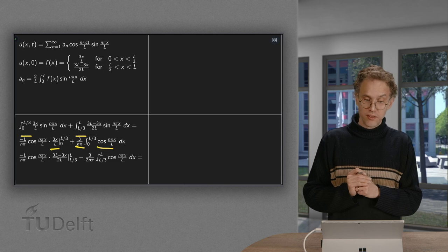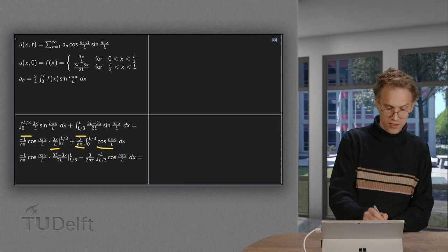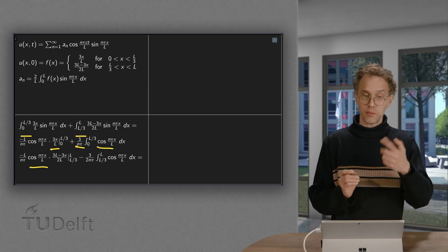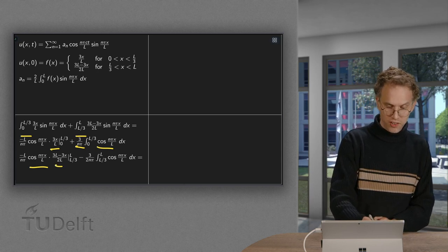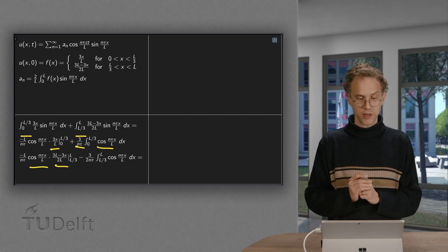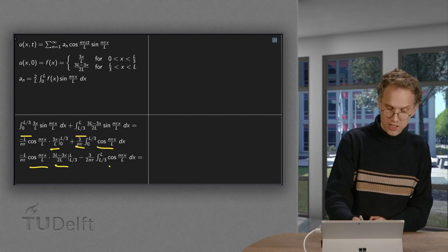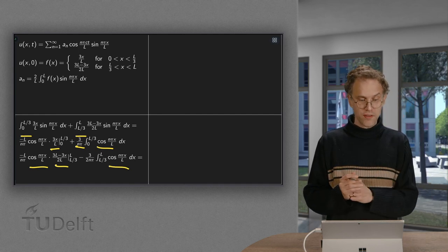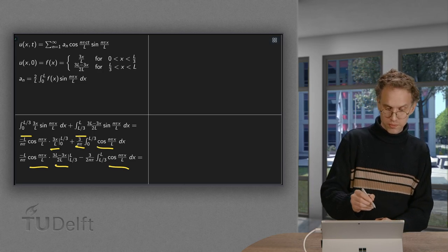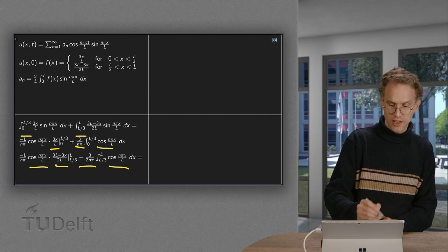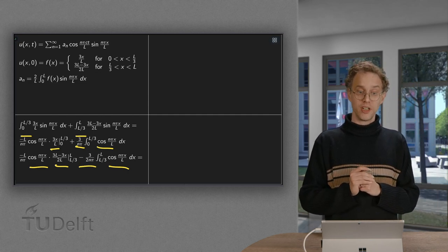Then same trick for the other term. So we integrate the sine again. Gives us a cosine n pi x over L times minus L over n pi times this 3L minus 3x over 2L between the boundary points. Minus this cosine times the derivative of 3L minus 3x over 2L, which is minus 3 over 2L, which gives us a minus 3 over 2n pi. So there we are.